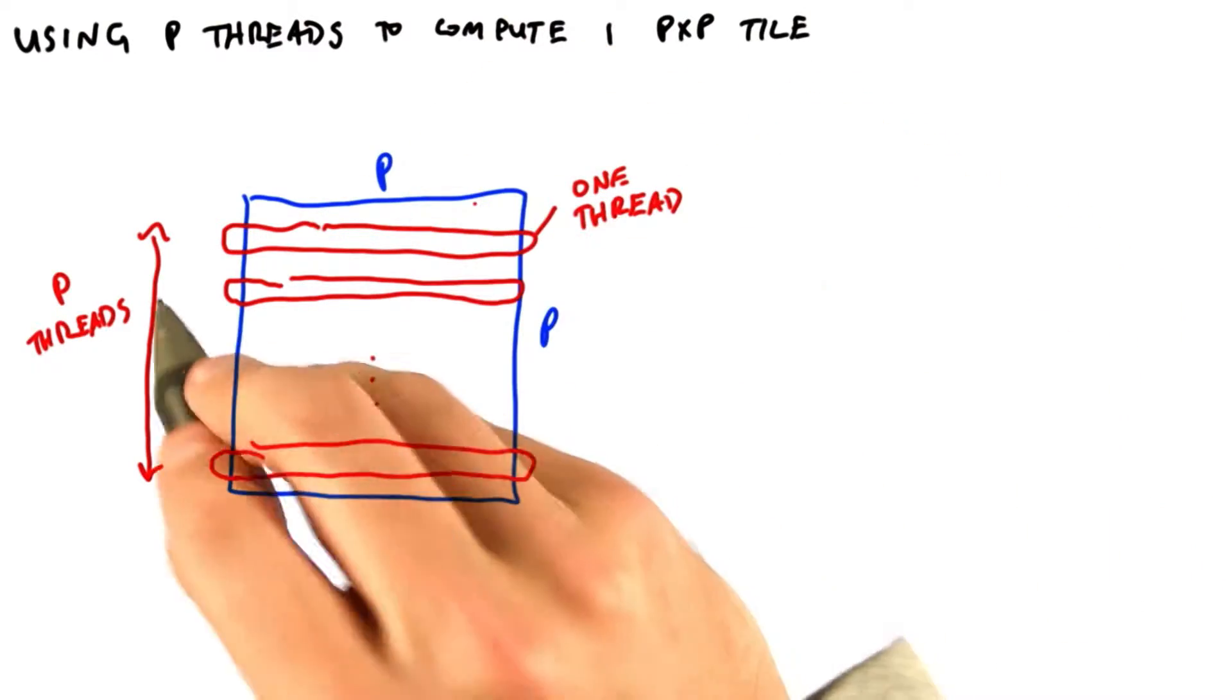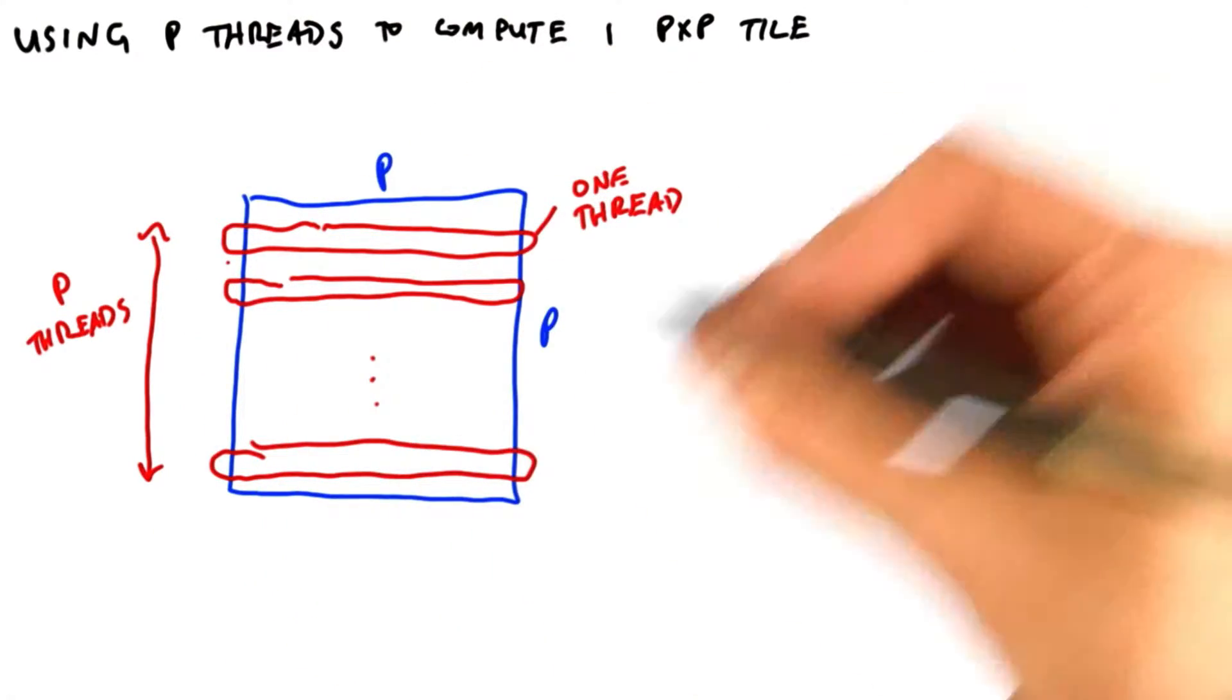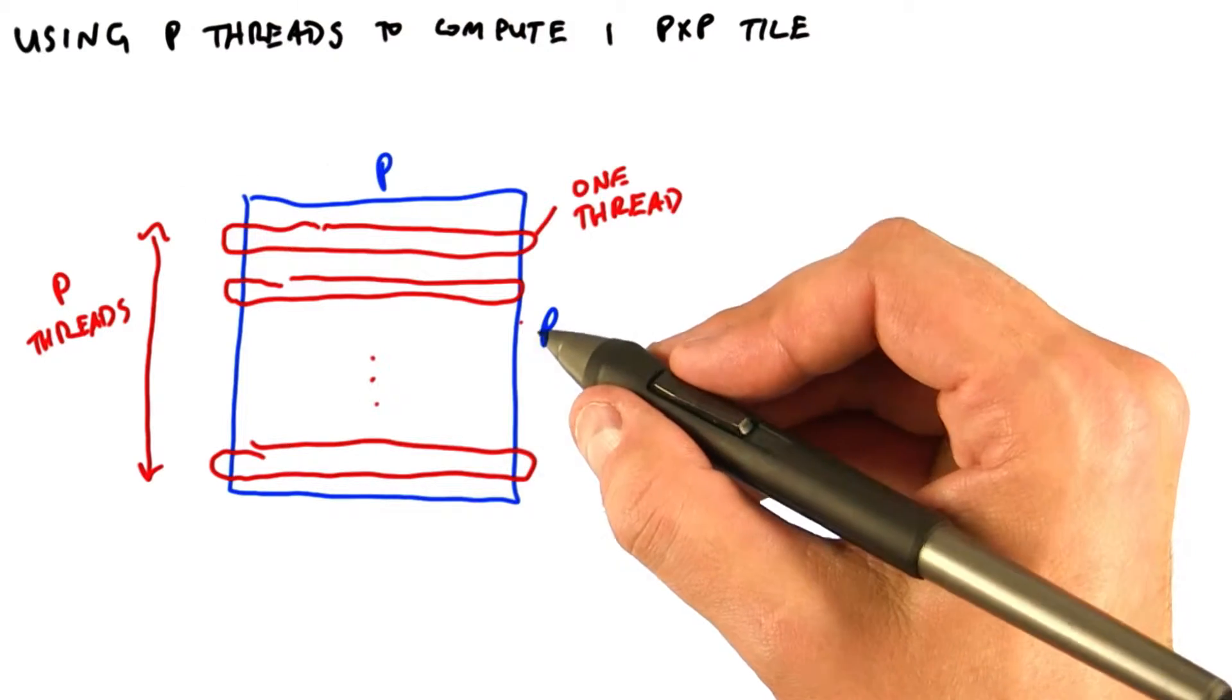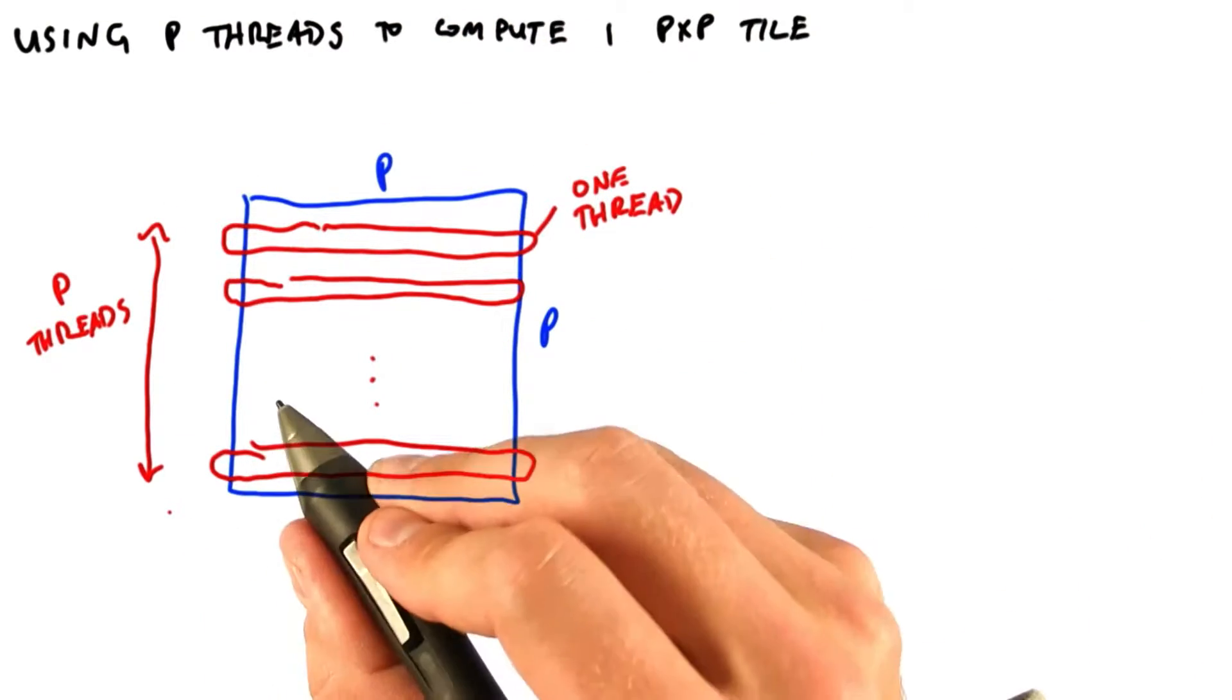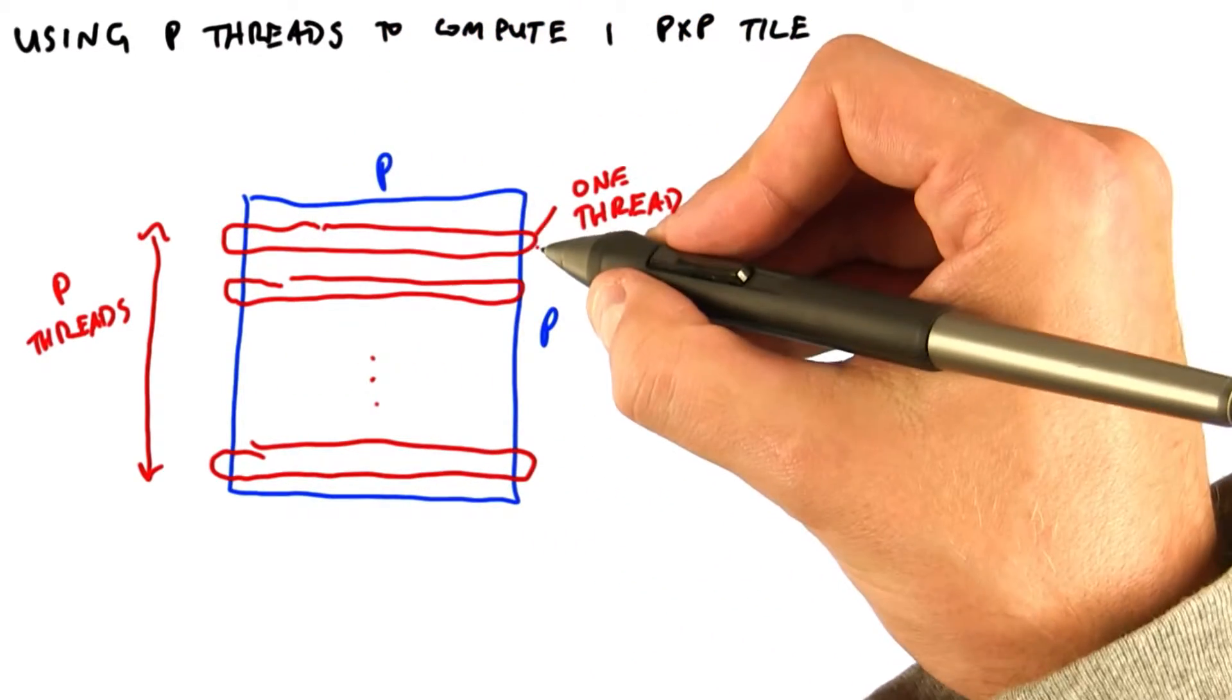Instead of having p squared threads to compute p squared force interactions and then summing them up between threads, we'll only use p threads total. Each of these p threads will then be responsible for p interactions.